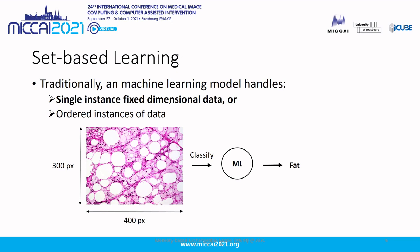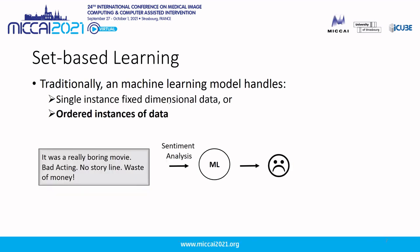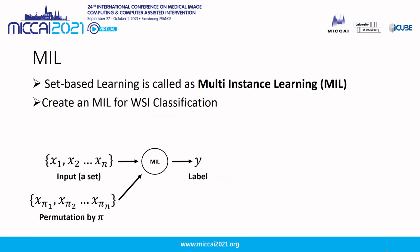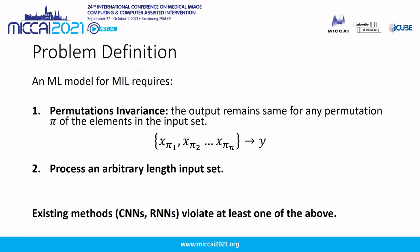Traditionally, a machine learning model handles two types of data: a single instance fixed-dimensional data, or ordered instances of data. But when the learning happens on a set as an input, it's known as multi-instance learning. The objective of this research is to create a MIL model for whole slide image classification. An MIL model is required to have two properties: permutation invariance — that is, the output of the model remains the same regardless of the permutation of its input elements — and the ability to process an arbitrary-length input set. Existing methods such as CNNs and RNNs violate at least one of these properties.